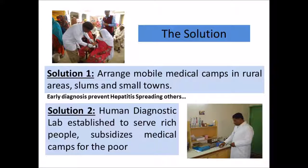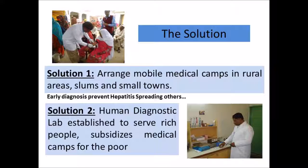Early diagnosis prevents hepatitis from spreading. For example, suppose two friends — one is carrying hepatitis C but does not know it. They can share meals or drinking water, and the other person could become a carrier. But if we diagnose that person and make them aware of their disease, they will prevent spreading hepatitis C to others.